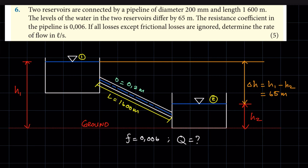Two reservoirs are connected by a pipeline of diameter 200 millimeters and length 1,600 meters. The levels of the water in the two reservoirs differ by 65 meters. The resistance coefficient in the pipeline is 0.006. If all losses except frictional losses are ignored, determine the rate of flow in liters per second.